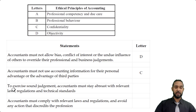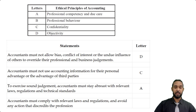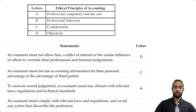Next, accountants must exercise sound judgment and stay abreast with relevant laws, regulations, and technical standards — that's definitely A, which is professional competency and due care. And finally, accountants must comply with relevant laws and regulations and avoid any action that discredits the profession — that's professional behavior, B.